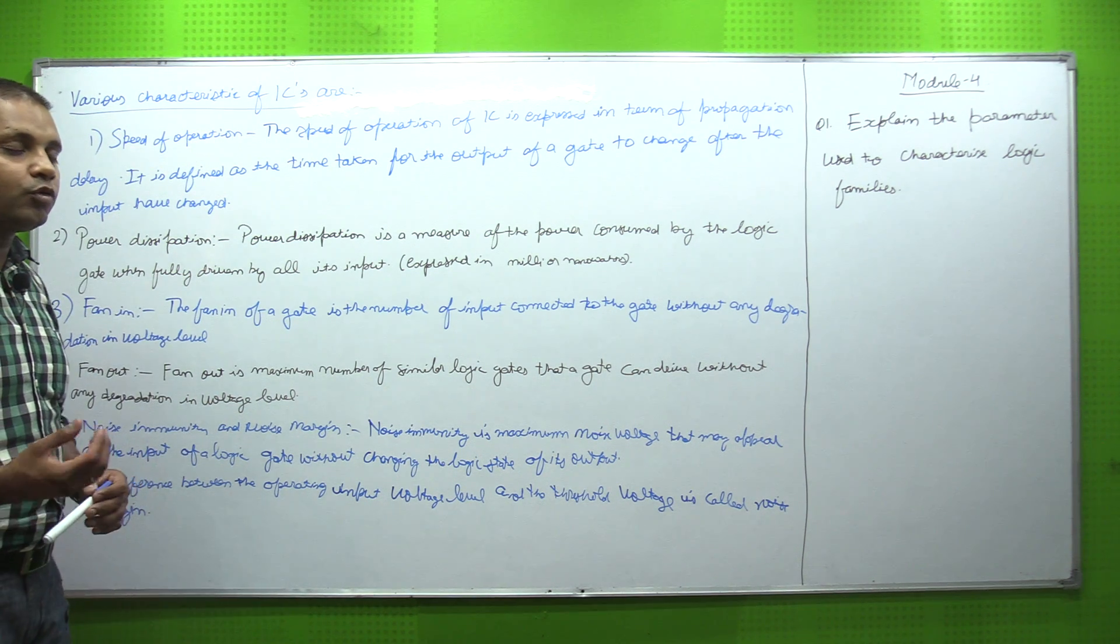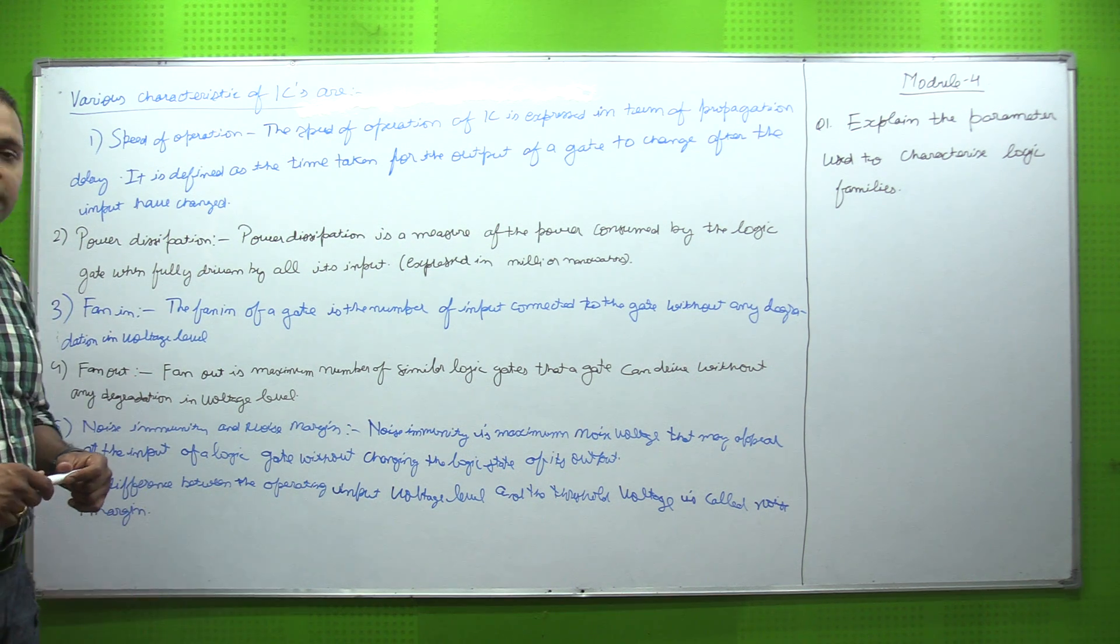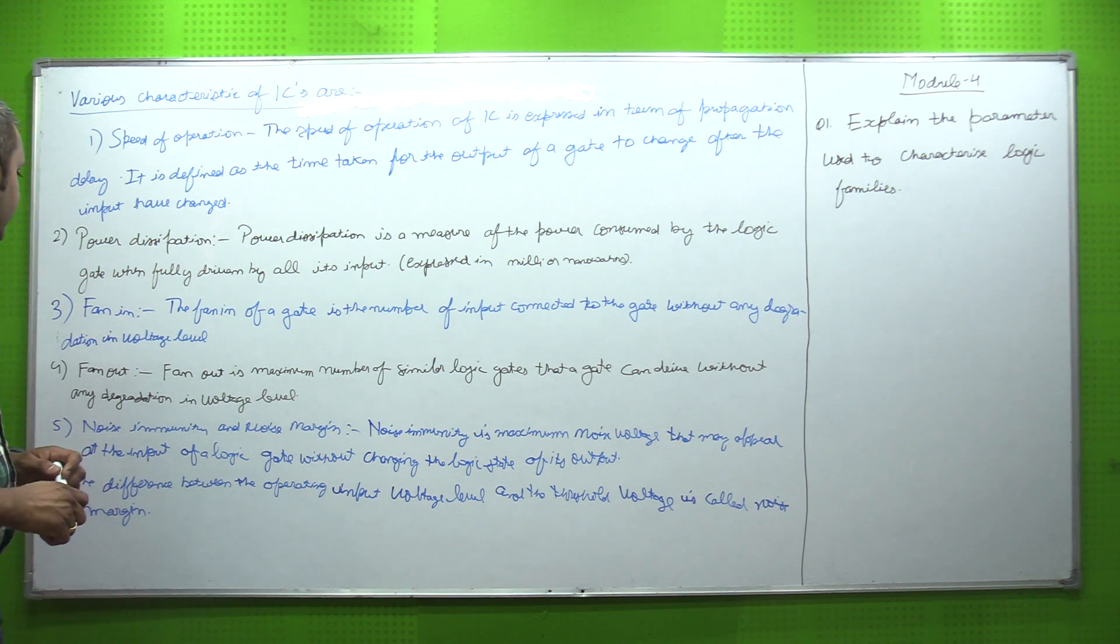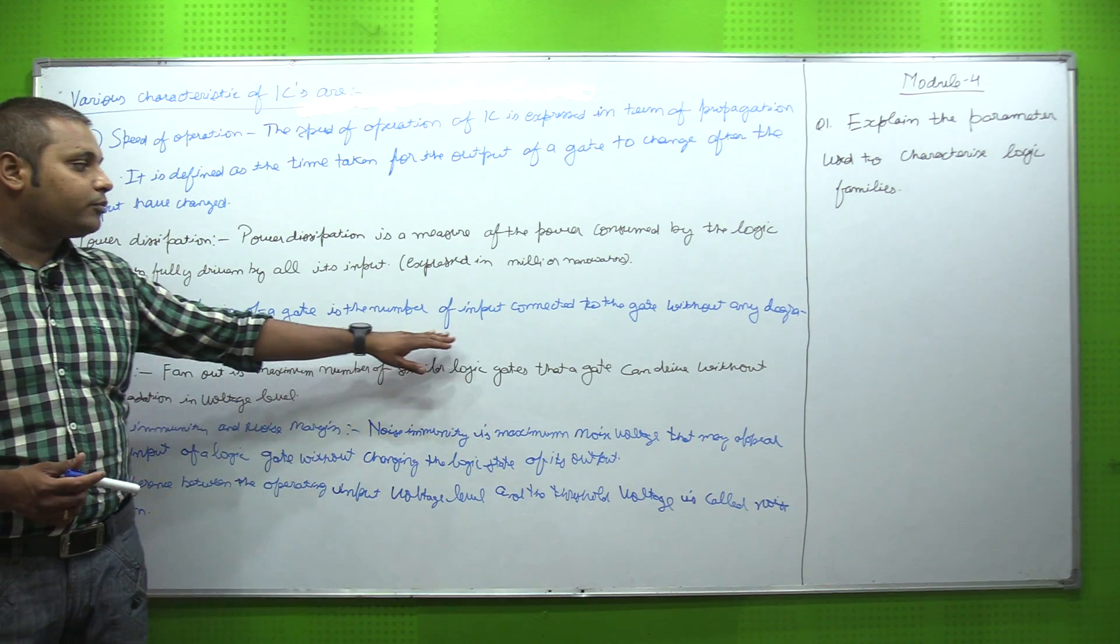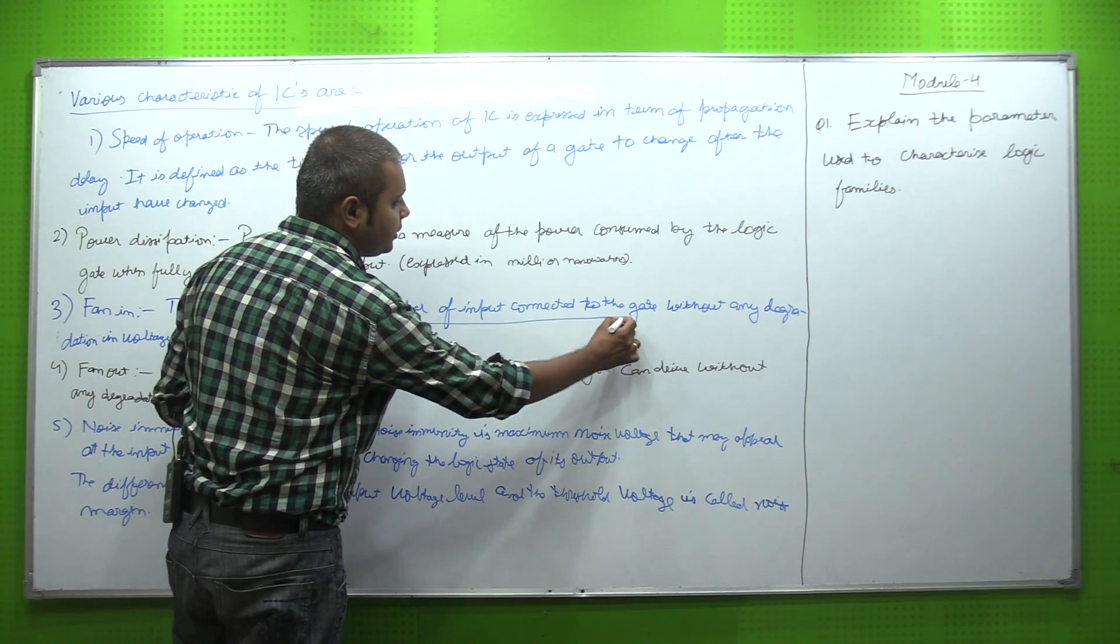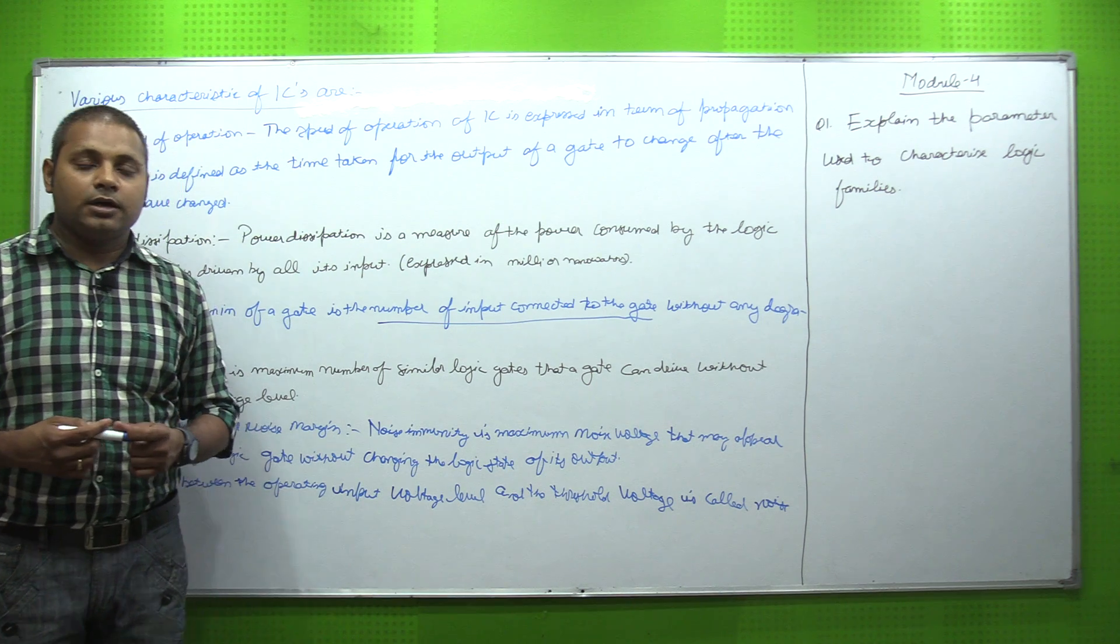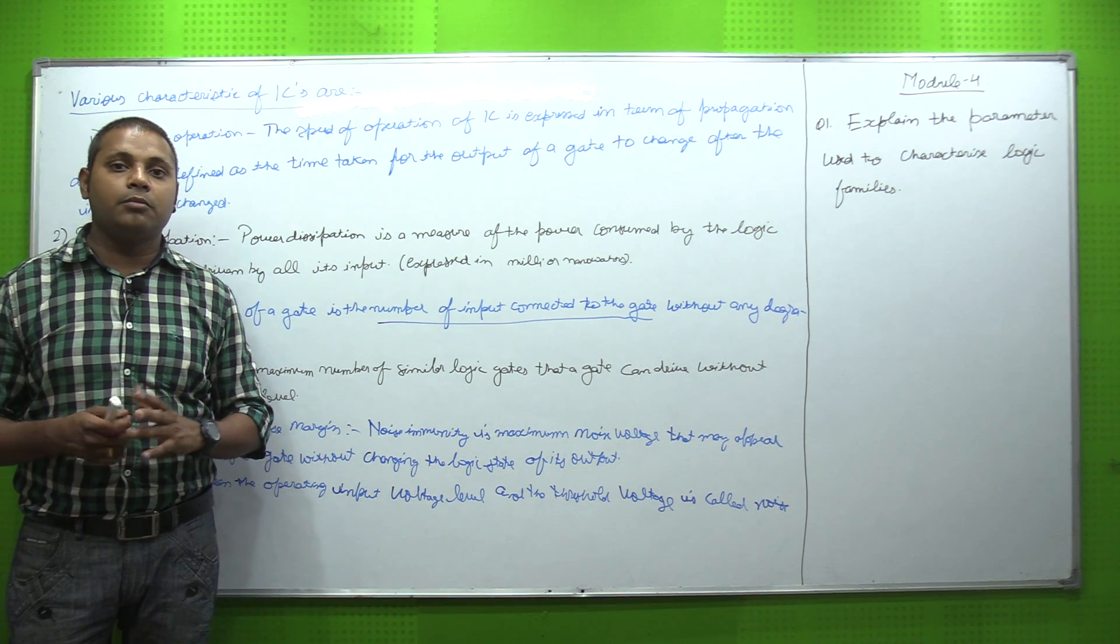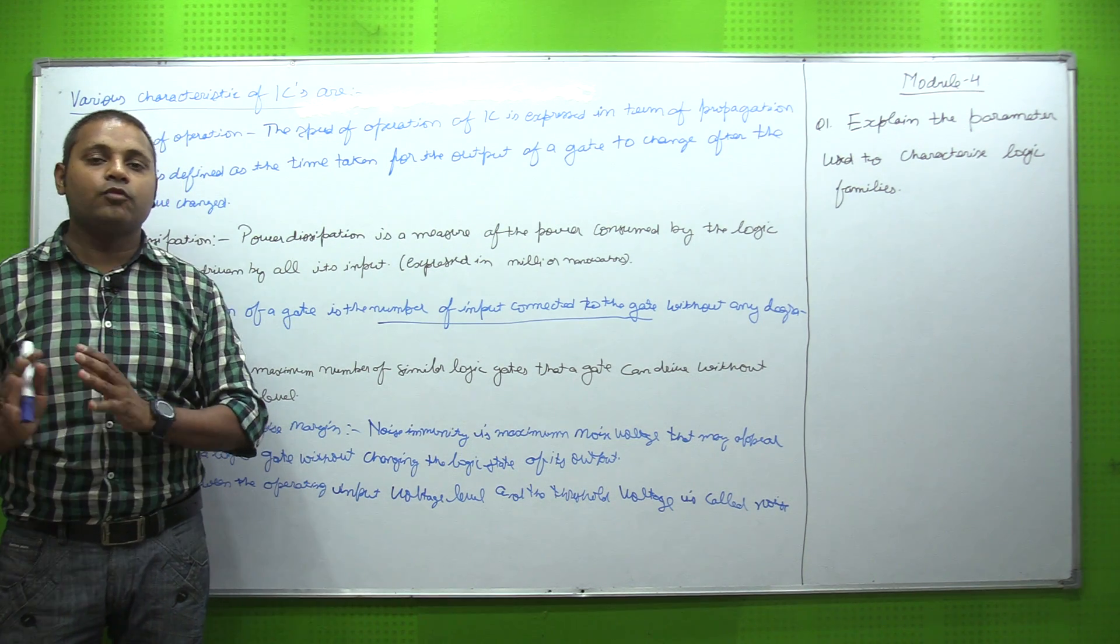Next one is fan-in. The fan-in of a gate is the number of inputs connected to the gate without any degradation in voltage level. This means if we connect a number of inputs to the gate, even if we increase the inputs, the voltage level remains as it is without degradation. That is the fan-in.